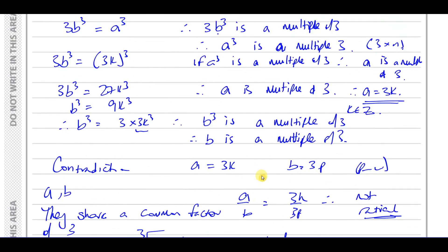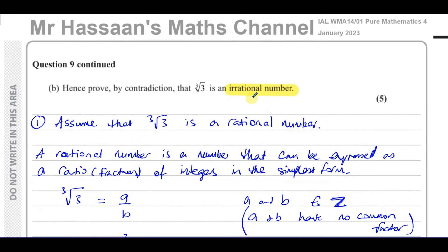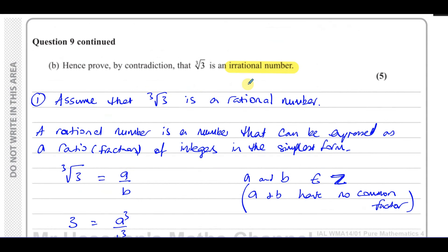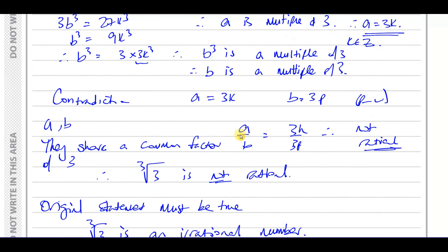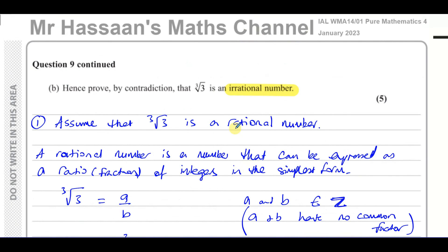This type of proof works for square roots and cube roots of various numbers like √2, √5, √7. We've proved by contradiction that the cube root of 3 is irrational, using Part A's result — that if P cubed is a multiple of 3, then P itself must be a multiple of 3 — as a key step. That concludes this question and this paper.